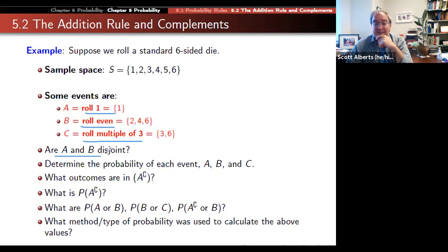Now, are A and B disjoint? Well, if I roll a one, I didn't roll an even number. And if I rolled an even number, I didn't roll a one. So in that case, they are disjoint. We can think about, well, if the probability I roll a multiple of three is one third, then the probability I didn't do that is the complement, which is two thirds.